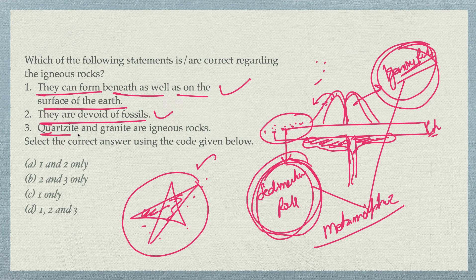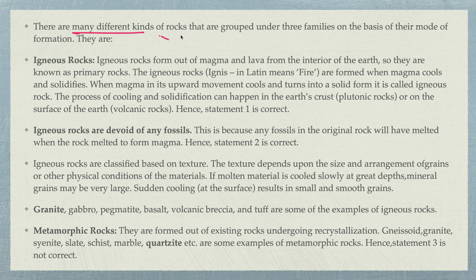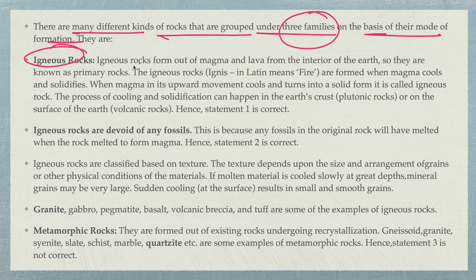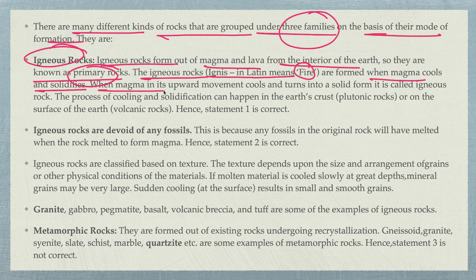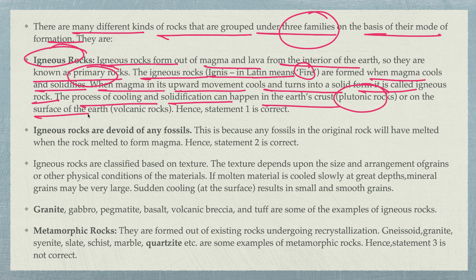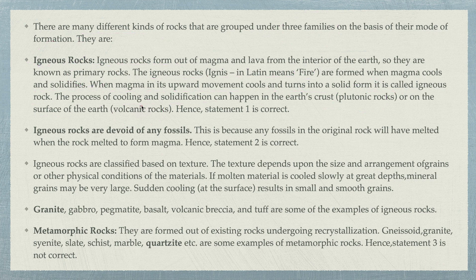Quartzite and granite — granite is an igneous rock, but quartzite is not. Quartzite is a metamorphic rock. Igneous rocks are formed from magma and lava from the interior of the earth, known as primary rocks. The word 'igneous' means fire. When magma cools and solidifies during its upward movement, it forms igneous rock. Cooling inside the earth crust is called plutonic rock; on the surface it's volcanic rock.